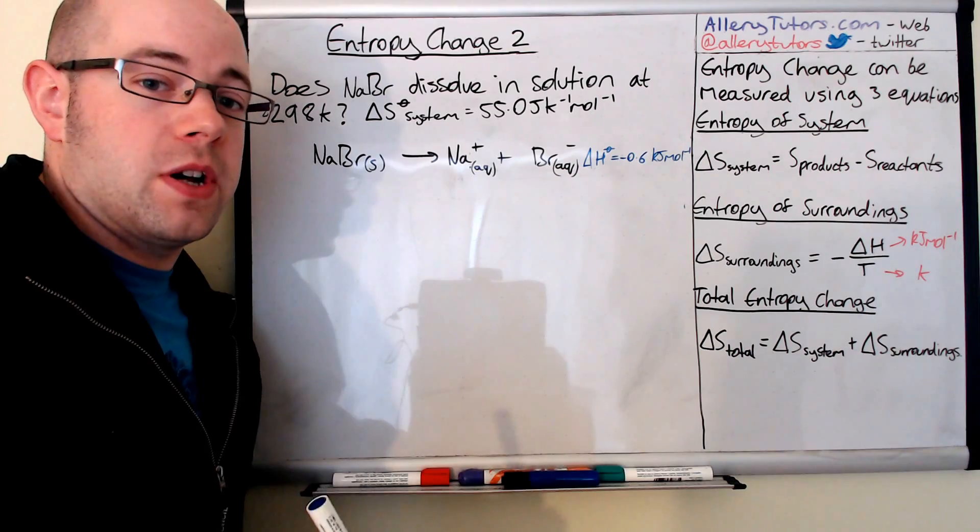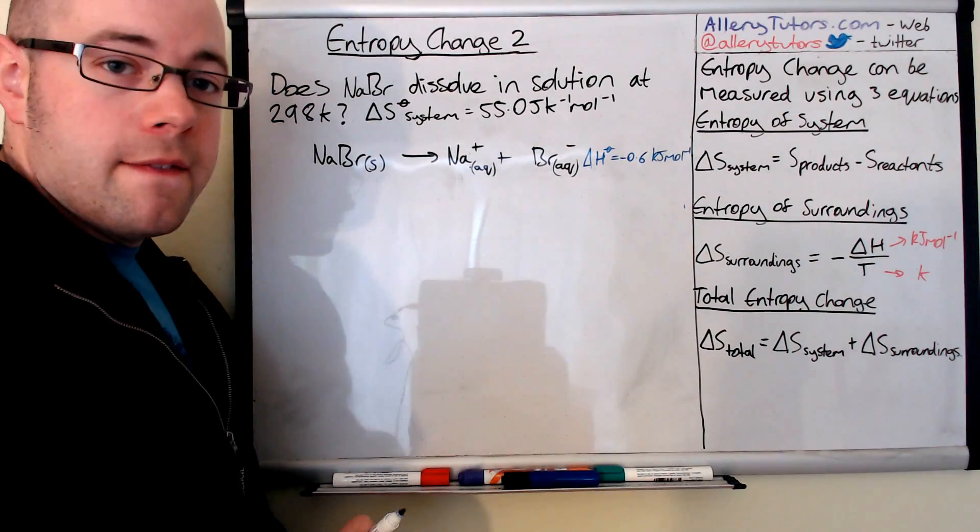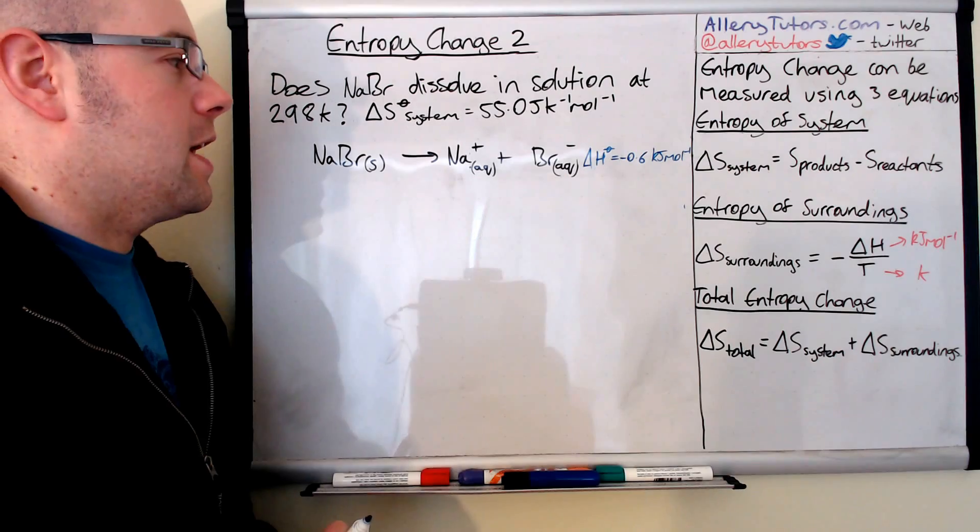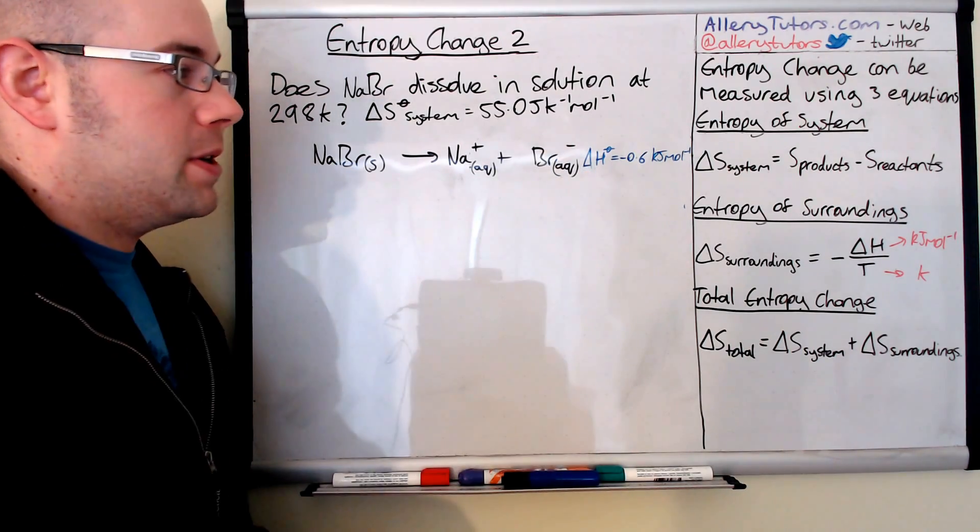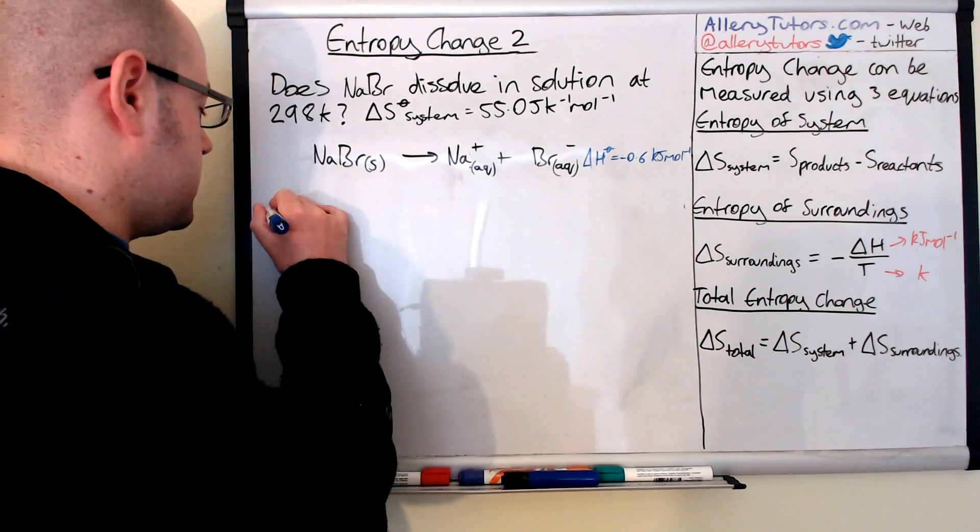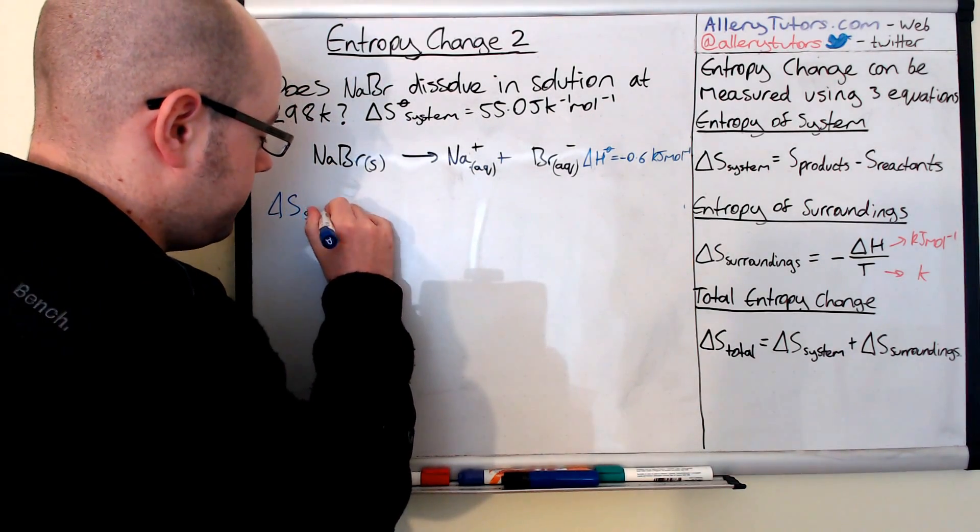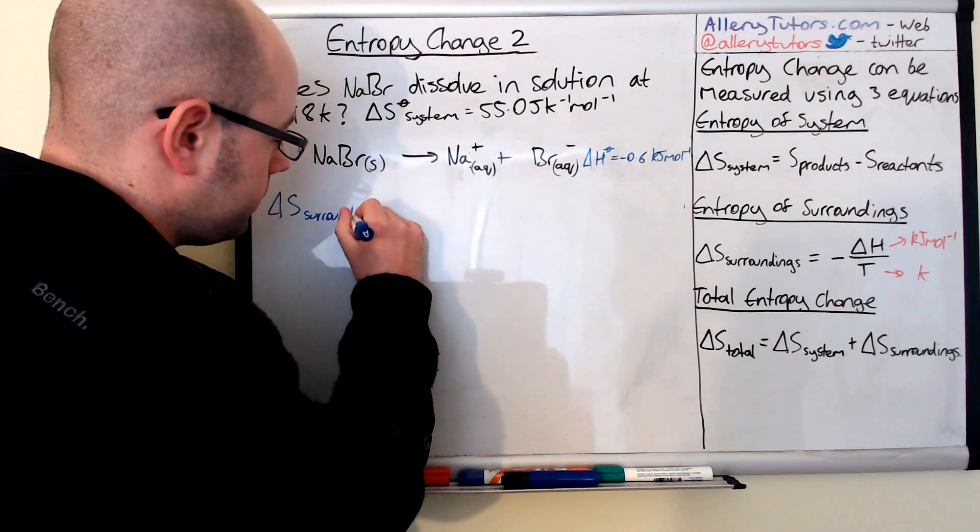The answers are underneath here as a worked example. We have an entropy change for this reaction, which is very slightly exothermic. So it's minus 0.6 kilojoules per mole. We're going to work out the entropy of the surroundings. So we put delta S surroundings.